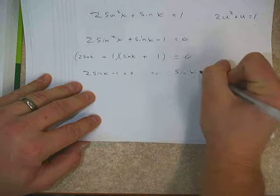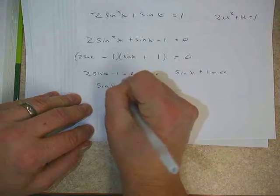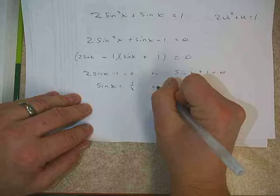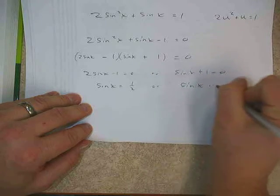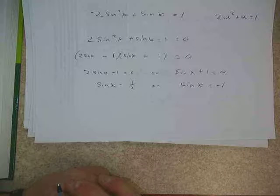And then from there, we'll use our zero product property to find our solutions. So in this case, I'd wind up with sine x equals 1 half. In this case, I'd wind up with sine x equals negative 1.